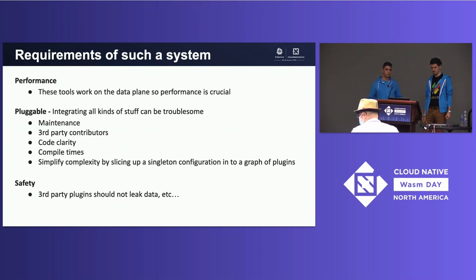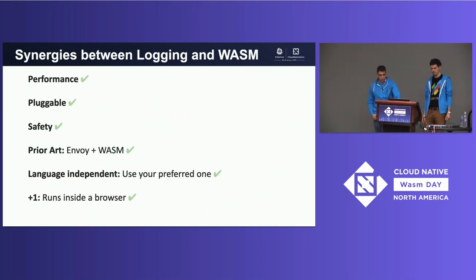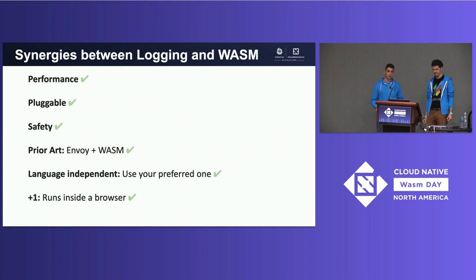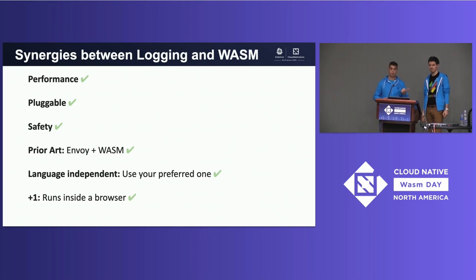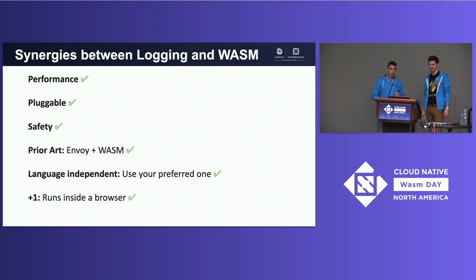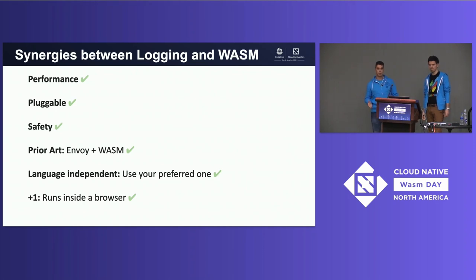Now I'll start talking about WebAssembly — I think you know where I'm heading. Performance is crucial in Wasm, and one of the main purposes of Wasm is real, native-like performance. It's plugin-based — I don't need to describe that, we've been talking about this all day. Safety is perhaps more important than performance itself. We have prior art for using Wasm as plugins — for example, in Envoy proxy you can use Wasm plugins to filter or authenticate HTTP traffic. Wasm is language-independent, so you don't have to learn yet another language, and as a bonus it runs in the browser as well.